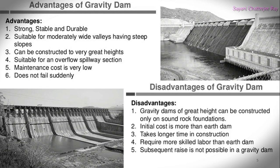Let us check the advantages of a gravity dam. A gravity dam is generally strong, stable, and durable, and requires low maintenance, as it is constructed with masonry or concrete with strong foundations. It is suitable for moderately wide valleys with steep slopes and can be constructed to greater heights. It is suitable for an overflow spillway section, the maintenance cost is very low, and it does not fail suddenly.